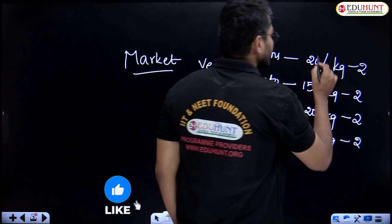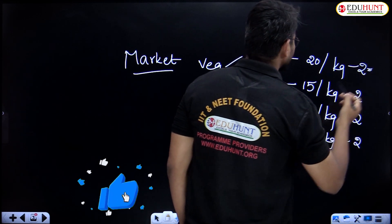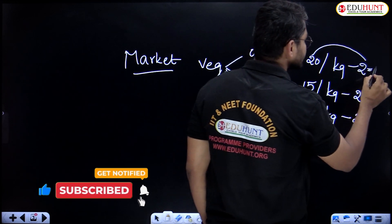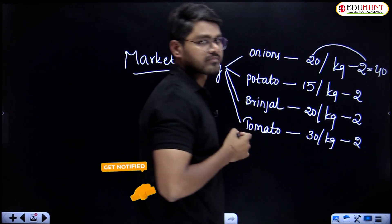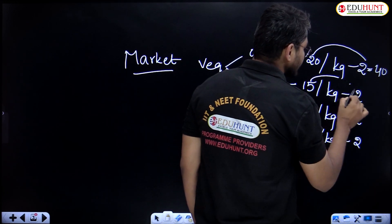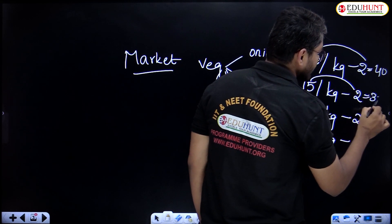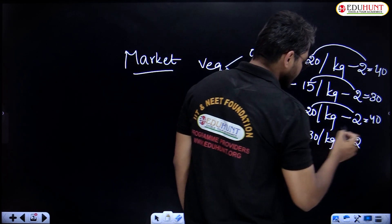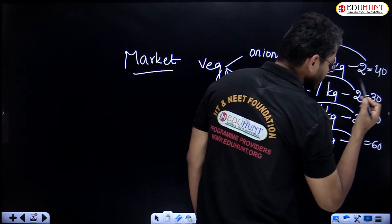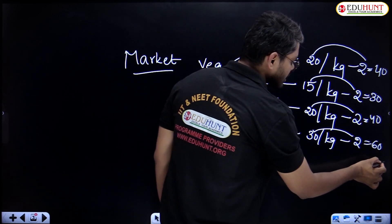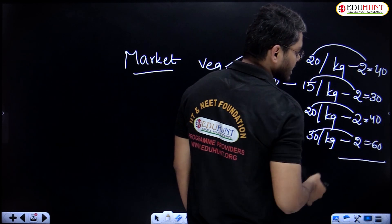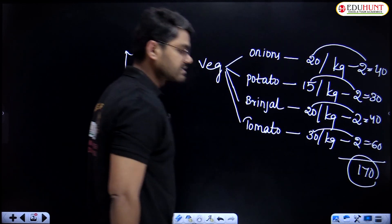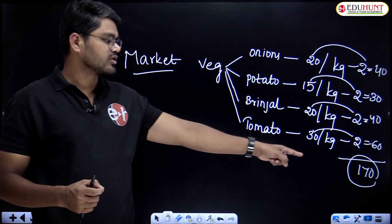How much do I have to pay for onions? 20 into 2, that is 40 rupees. Next, 15 into 2, 30 rupees. And 20 into 2, 40 rupees. And 30 into 2, 60 rupees. So what is the total cost? 60 plus 40 is 100, 100 plus 70 is 170. So actually I have to pay 170 rupees.